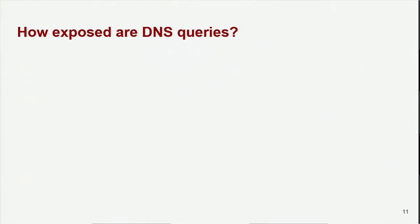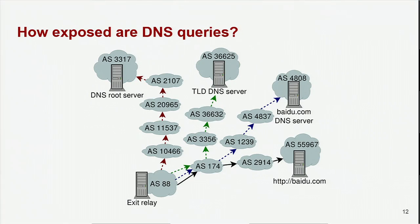The first question we wanted to answer is: how exposed are DNS queries? Normally in past traffic correlation studies, researchers have only worried about the TCP traffic coming out of TOR and not the DNS traffic. Past work has shown that an attacker who can see traffic going into TOR and the TCP traffic coming out of TOR can potentially link the two and figure out what website a TOR user is visiting. So we were wondering if there are parts of the internet that get to observe DNS traffic coming out of TOR but not the TCP traffic, and what the possibilities are for leveraging that traffic. Here's a visualization of what I mean, and we'll go through this diagram together.